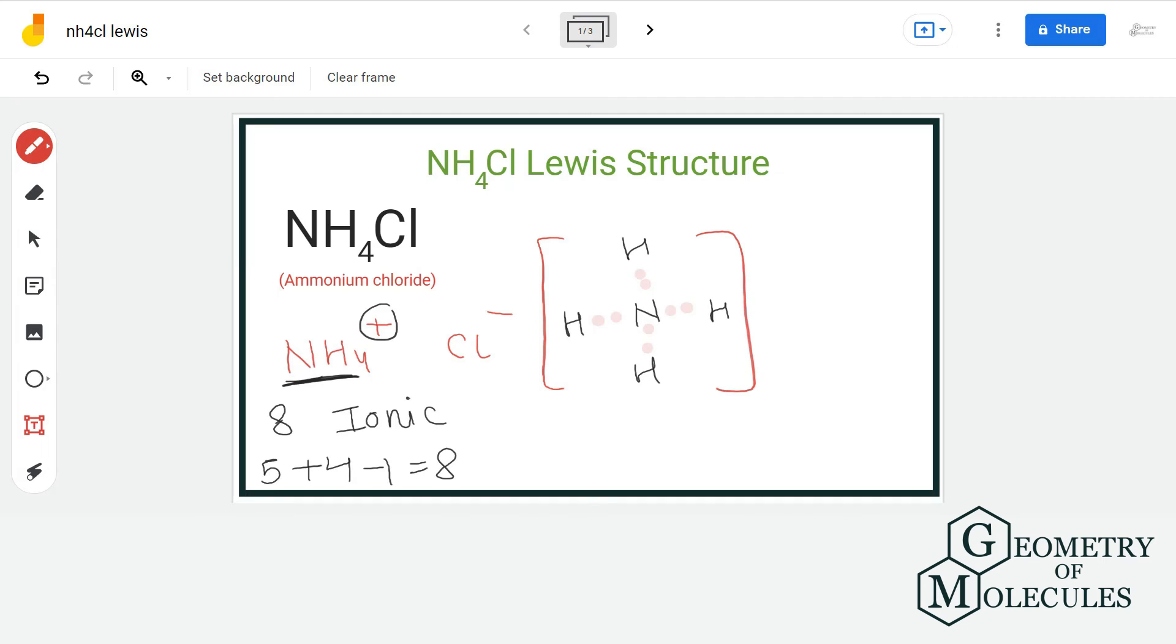So NH4+ is a cation and we will enclose it within a bracket. Now Cl- has eight valence electrons, so let us go ahead and show eight electrons around the chlorine atom.